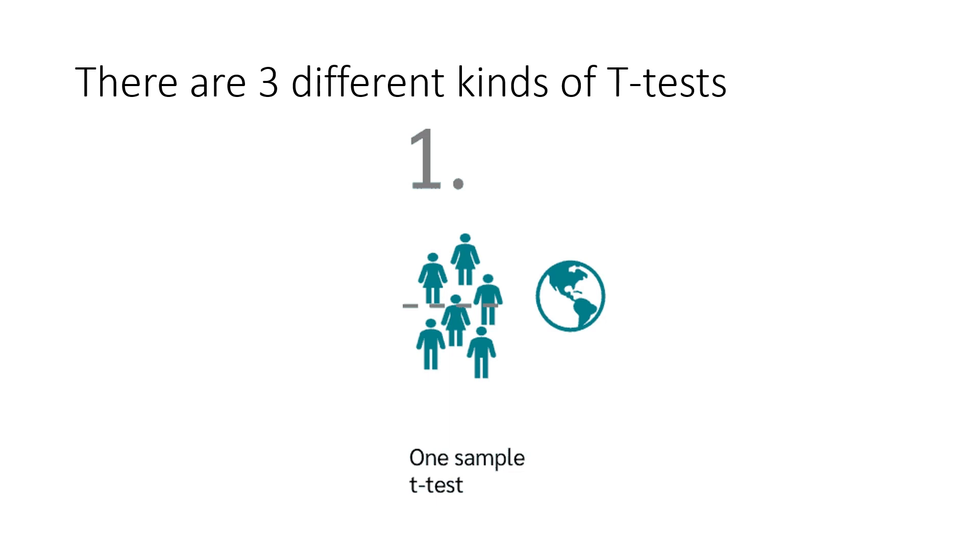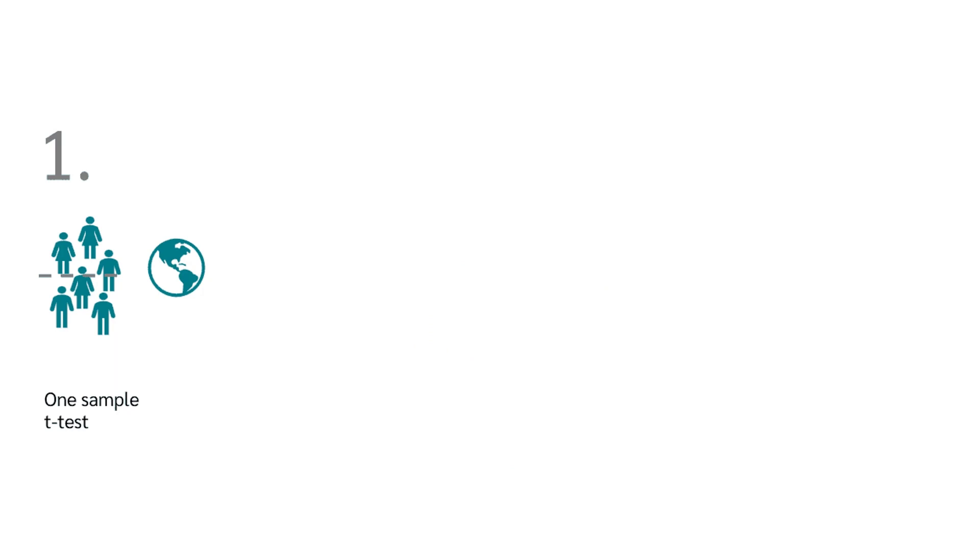Up first we have the one sample T-test. As the name suggests, this is the T-test you would use if you collect only one sample. This sample is then compared to a value that already exists, whether it's provided information or a population value.